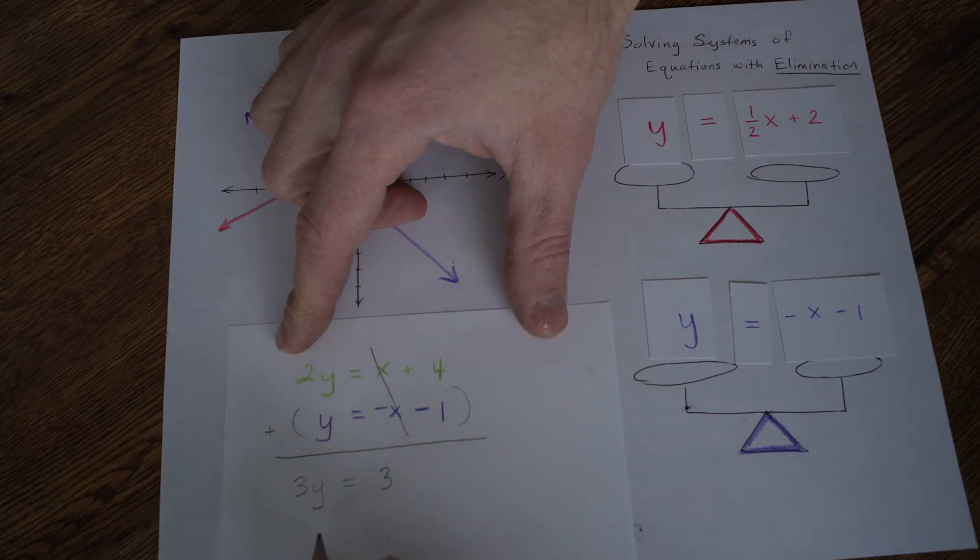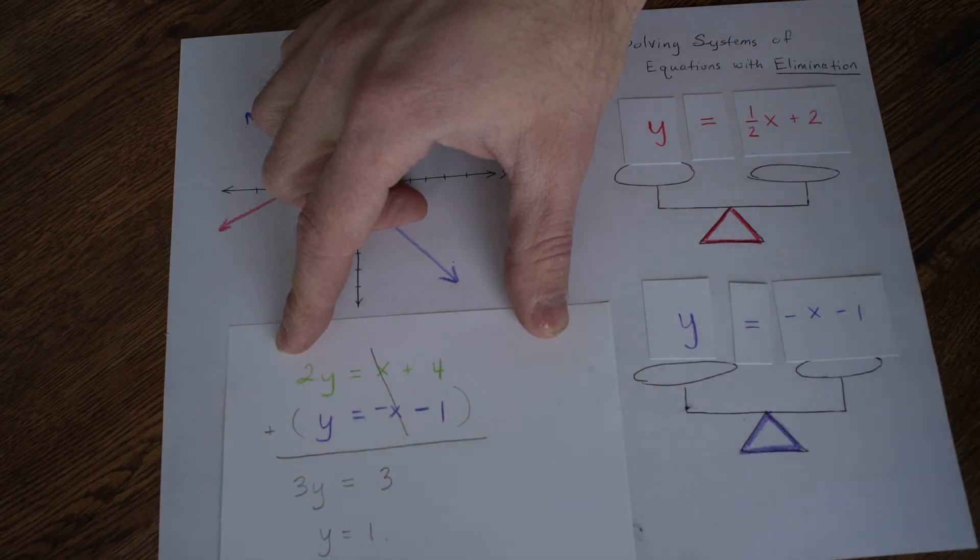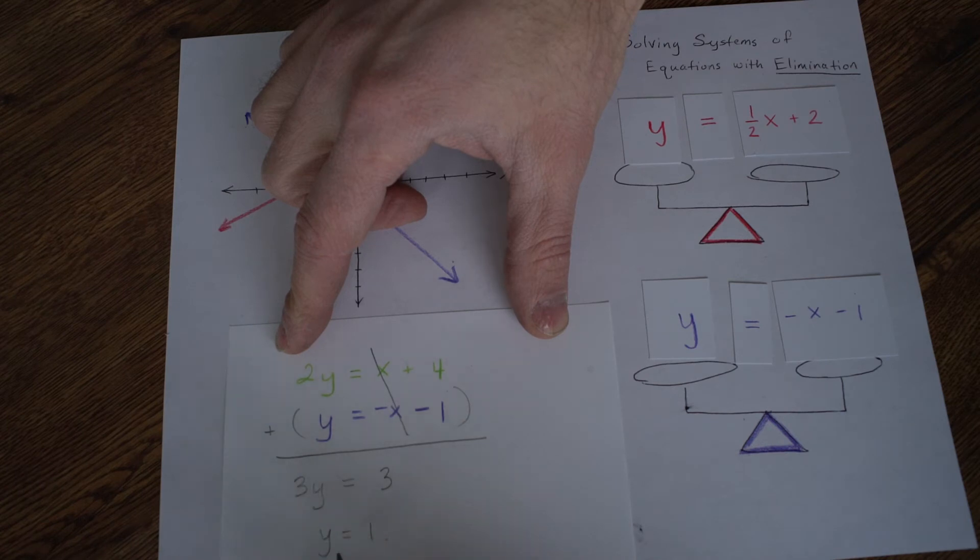4 plus negative 1 is 3. Now what does y have to equal? y would have to equal 1, because 1 times 3 is 3. Of course, you could divide both sides by 3 to make a ghost 1 here. That's the algebra division property of equality works.